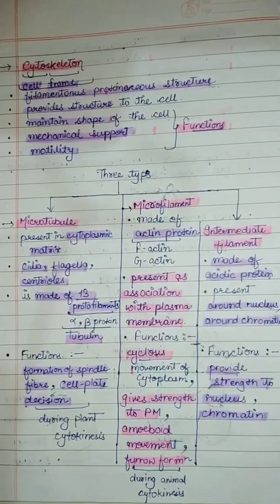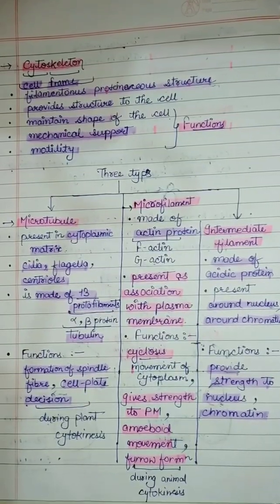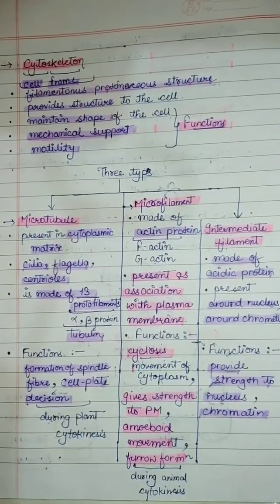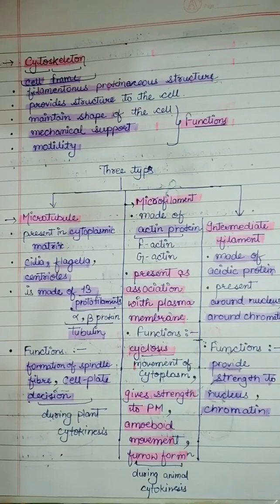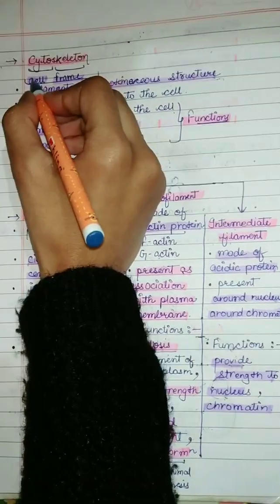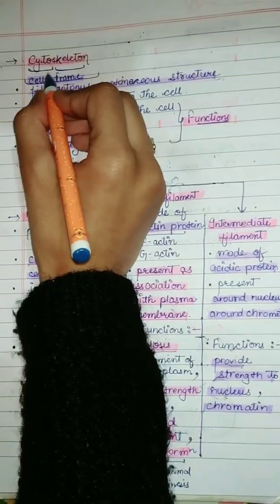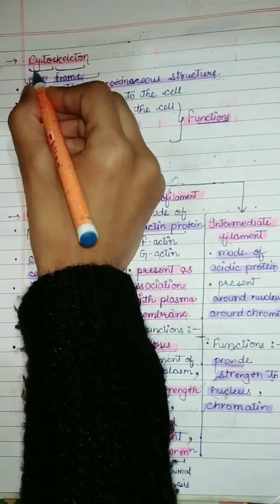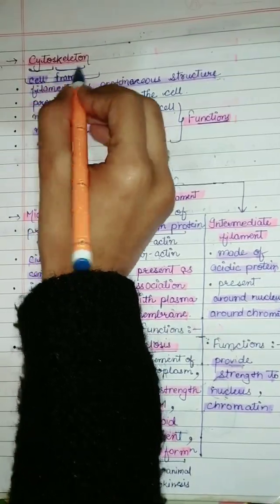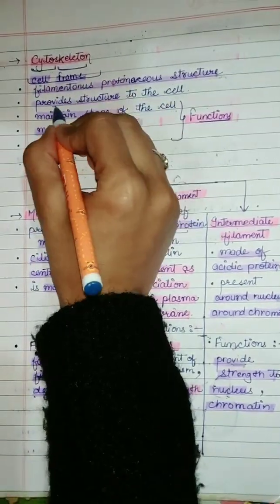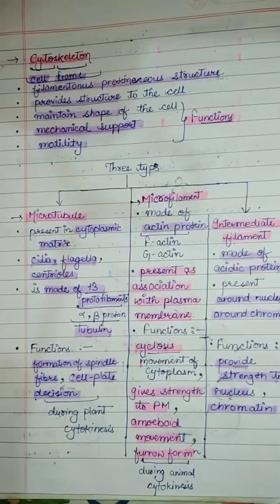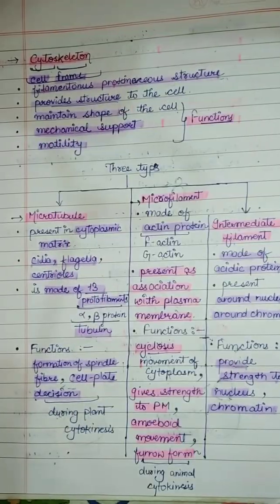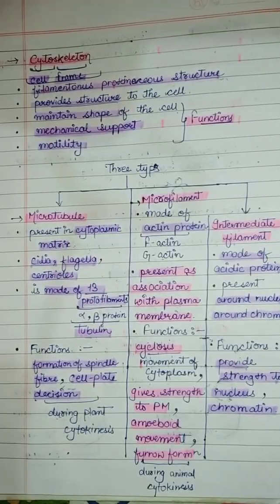Today's topic is cytoskeleton. Cytoskeleton is an elaborate network of filamentous proteinaceous structure which is present in the cytoplasm. The word cytoskeleton self-defines its meaning: cyto means cell and skeleton means frame. It provides structure to the cell, just like human beings have a skeletal system, the cell has a cytoskeleton.